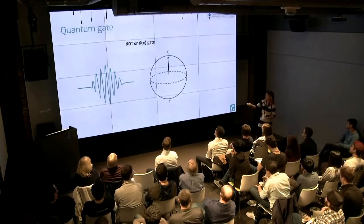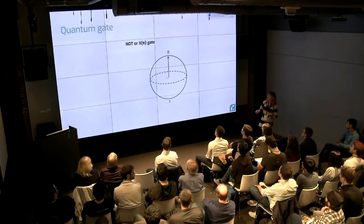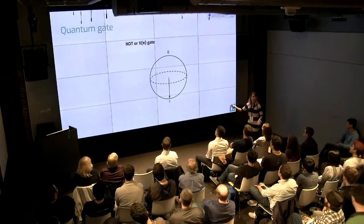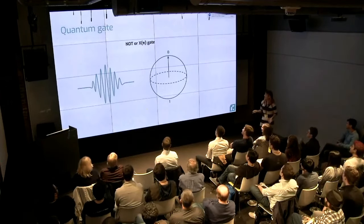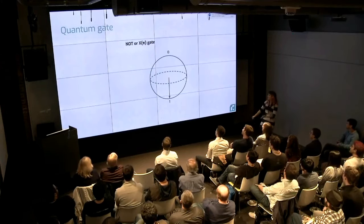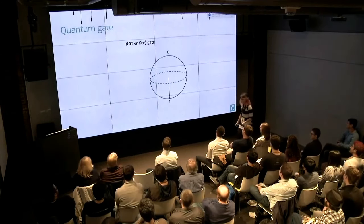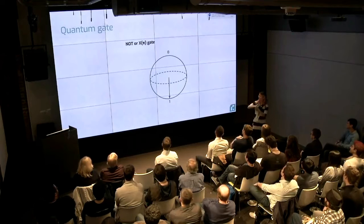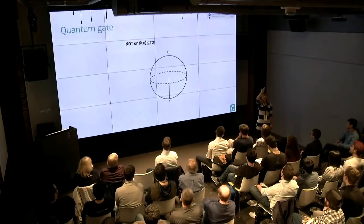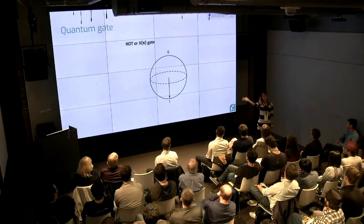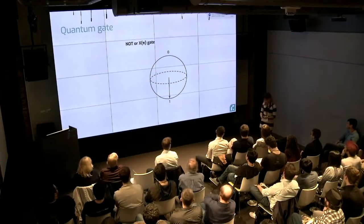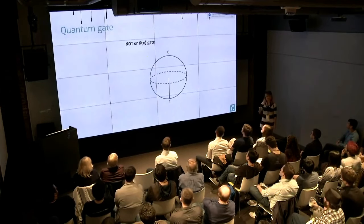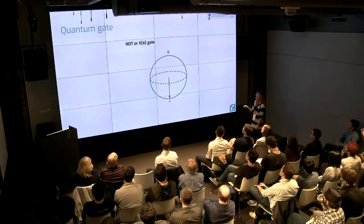For example, if I send a pulse like this — I just rotated the qubit on the Bloch sphere from the ground state to the excited state, or from zero to one. This is what we call a NOT gate, or a pi pulse — an X-pi rotation.